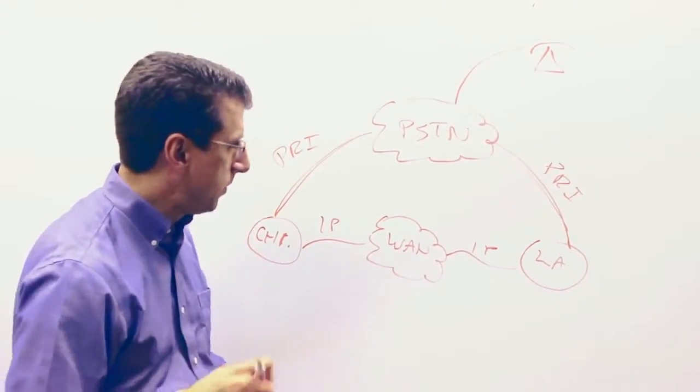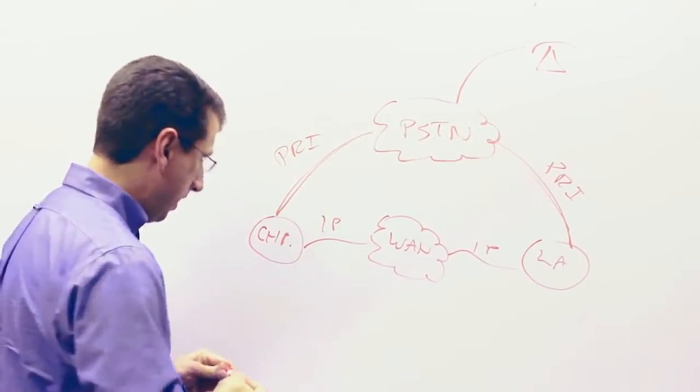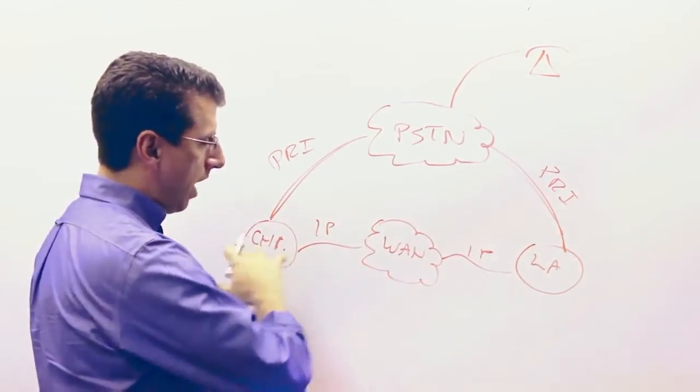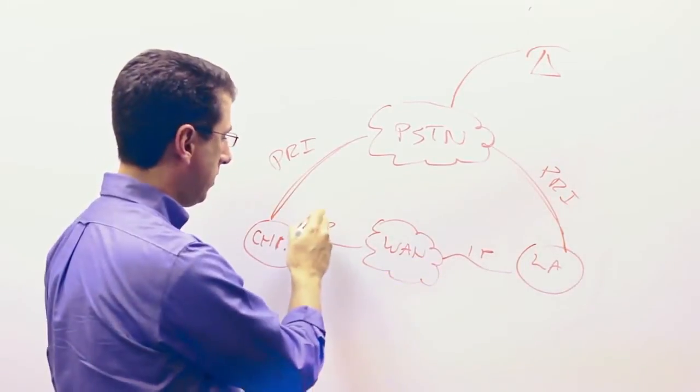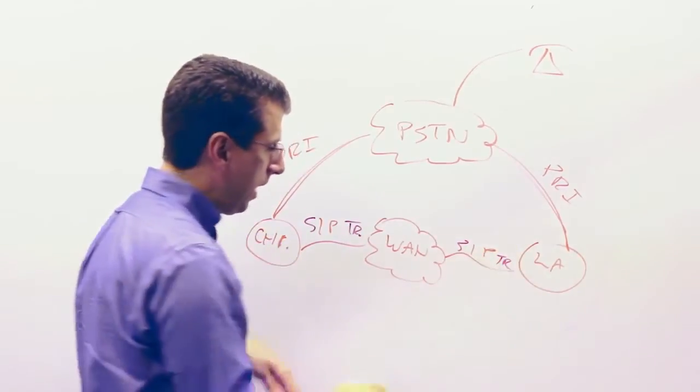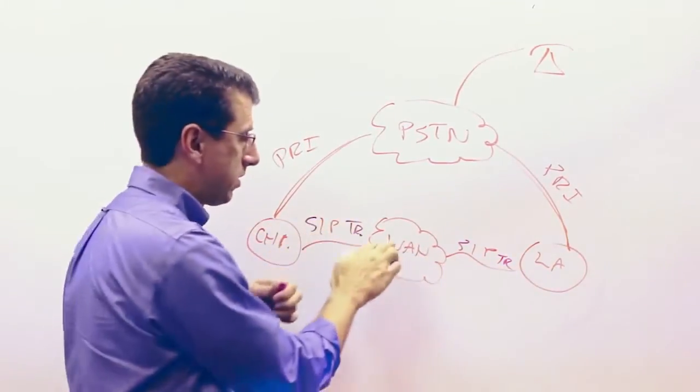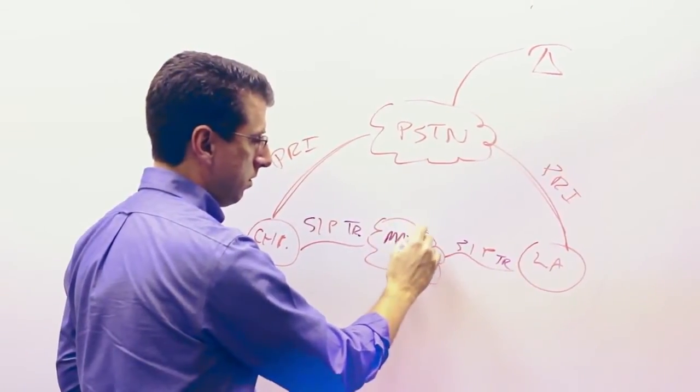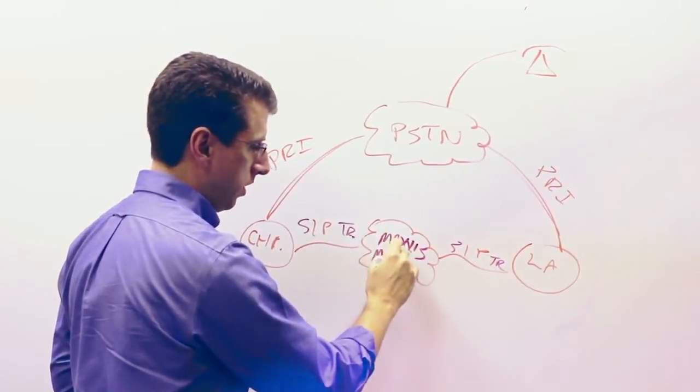Now what SIP trunking does is SIP trunking actually says, hey, let's go ahead and replace the IP connections on the WAN with a SIP trunking solution. So you get SIP trunking here. And then this WAN provider becomes us basically. WAN becomes Maxis and Max Connect, our SIP trunking product.